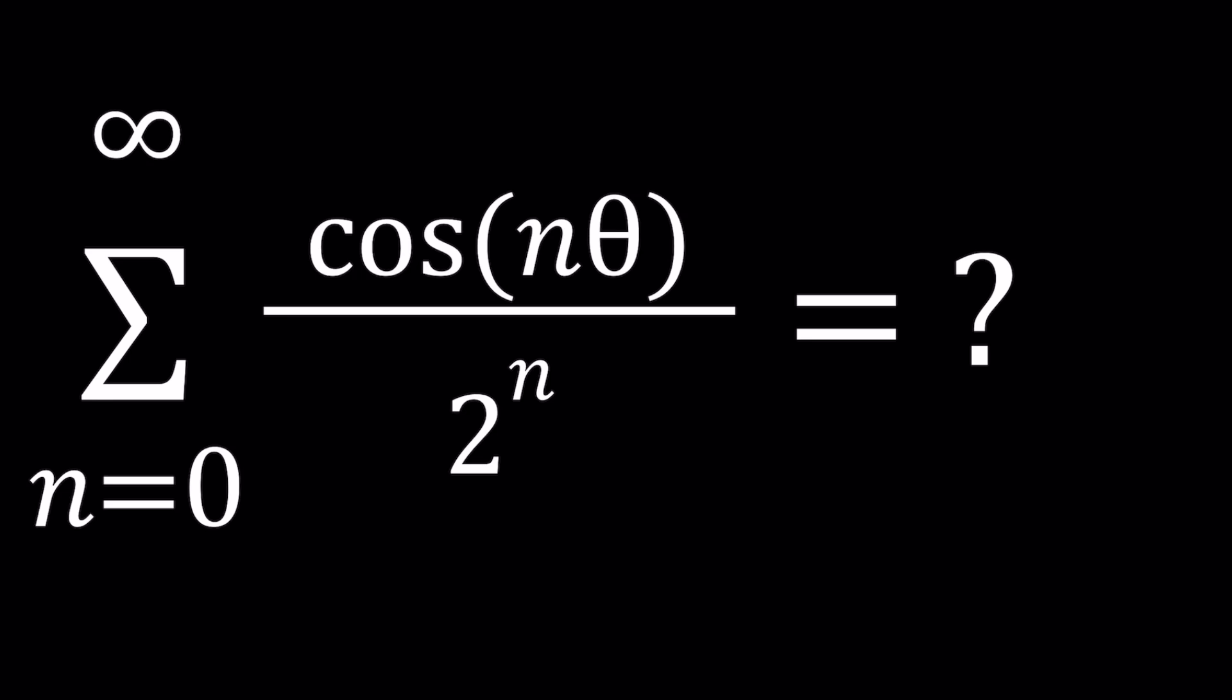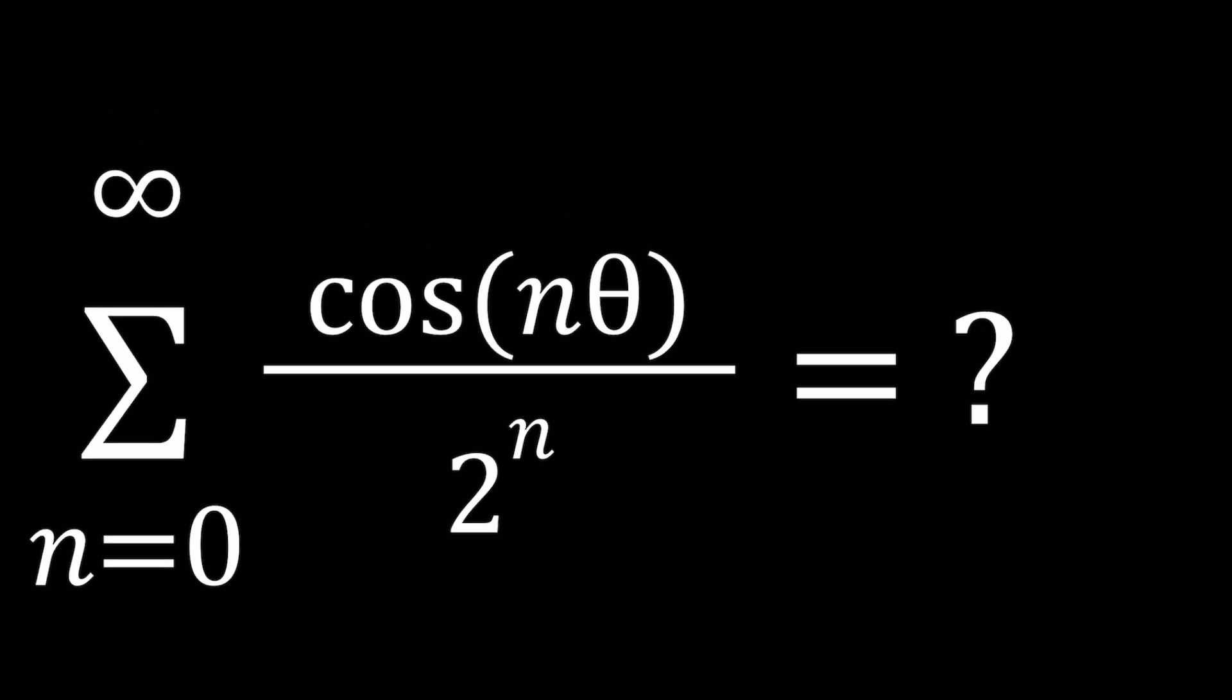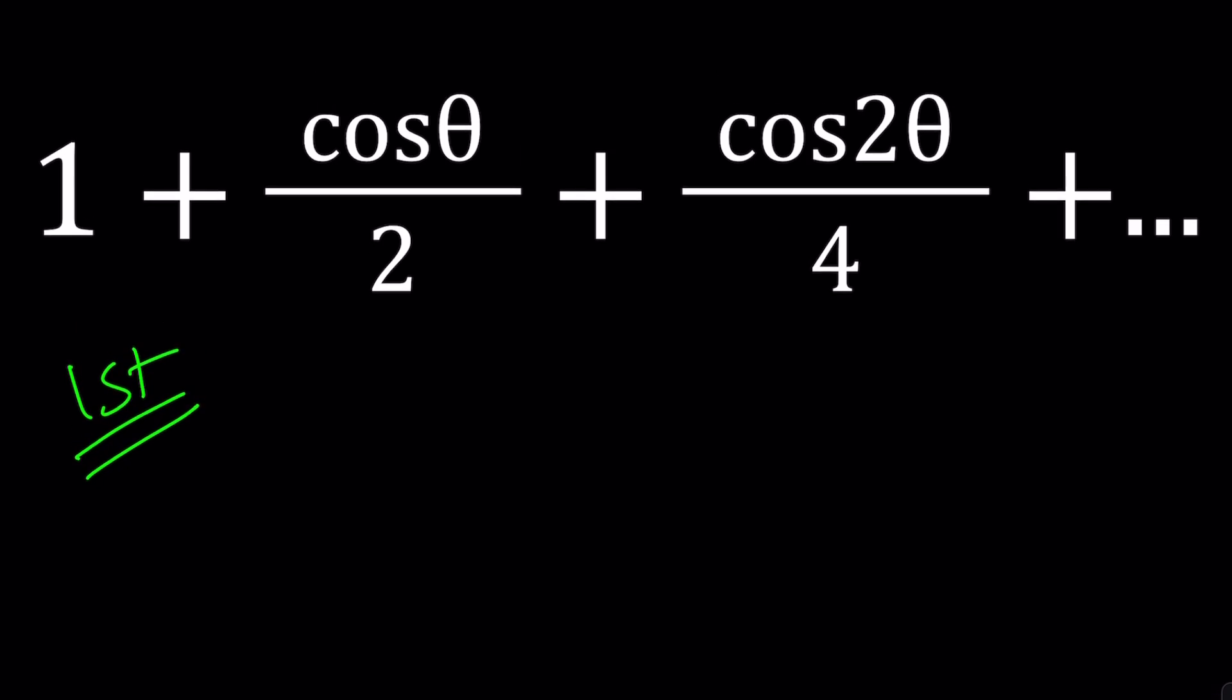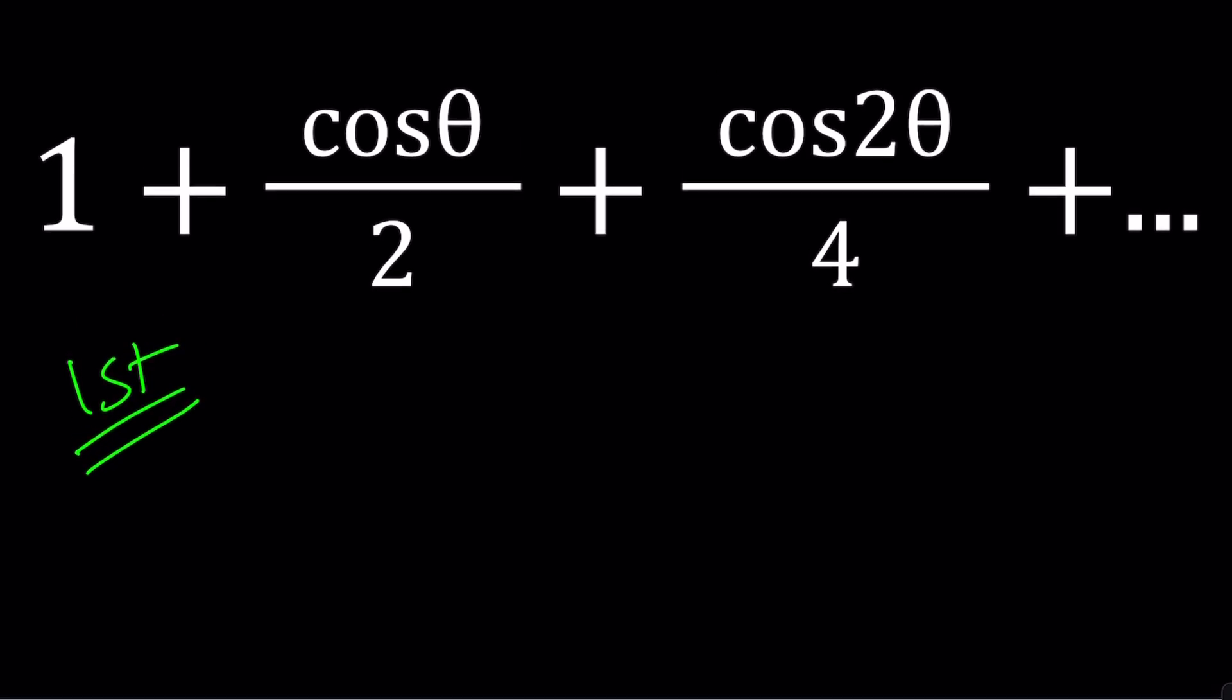So basically what we're doing here is we're taking n theta and then we're taking the cosine and dividing by 2 to the power of n. So the numerators are basically cosine of n theta. It's going to go like theta, 2 theta, 3 theta but the denominators are powers of 2 so it's going to be like 2, 4, 8, 16. Make sense?